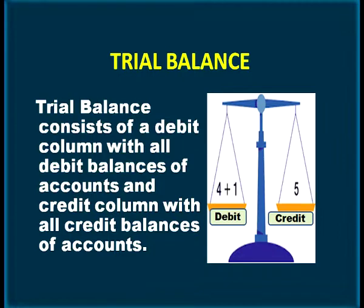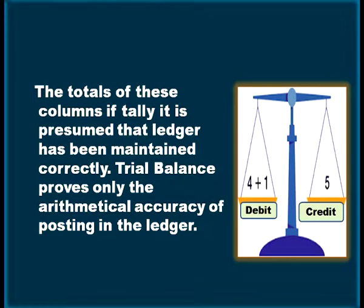In the trial balance, we have a debit column with all debit balances of accounts and a credit column with all credit balances of accounts. The totals of these columns, if they tally, it is presumed that the ledger has been maintained correctly. You can only assume that it is correctly maintained. Trial balance proves the arithmetical accuracy of posting in the ledger.